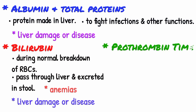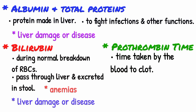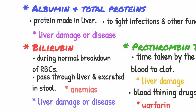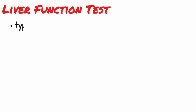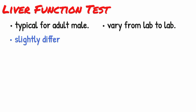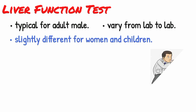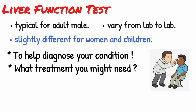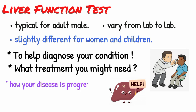For prothrombin time (PT): PT is the time it takes your blood to clot. Increased prothrombin time may indicate liver damage, but can also be elevated if you are taking certain blood-thinning drugs such as warfarin. These results are typical for adult males; normal results vary from laboratory to laboratory and might be slightly different for women and children. Your doctor will use these results to help diagnose your condition or determine what treatment you might need. If you already have liver disease, liver function tests can help determine how your disease is progressing and if you are responding to treatment.